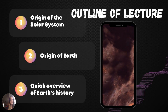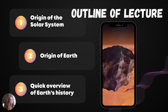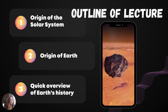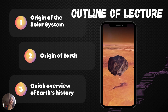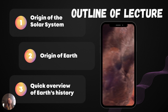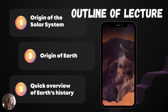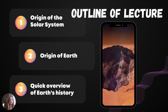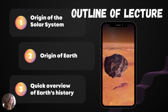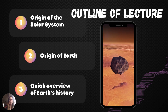First, we're going to start with the origin of the solar system, and then we're going to look at the origin of the Earth and the Moon, and then we'll look at a quick overview of Earth's history. But we will have an entire module where we talk about geochronology and dating methods and how we know how old things are.